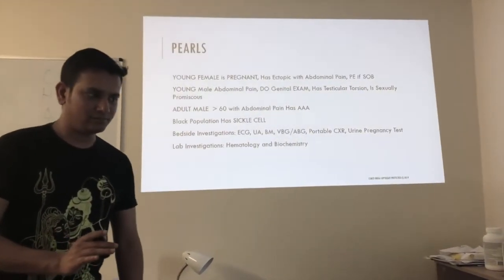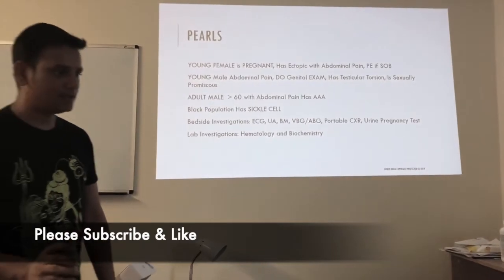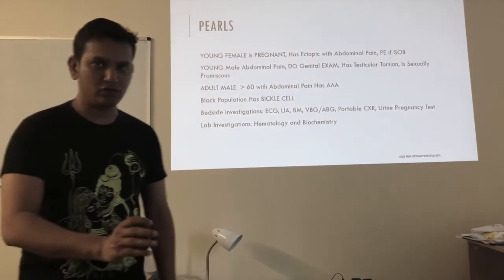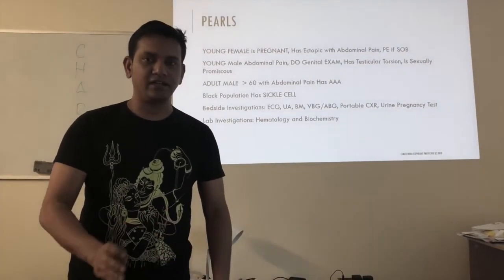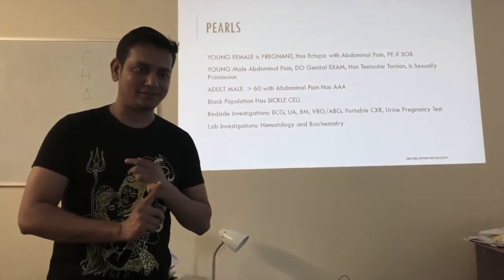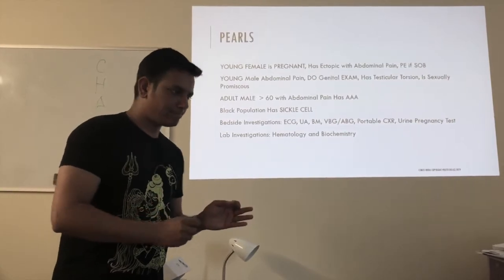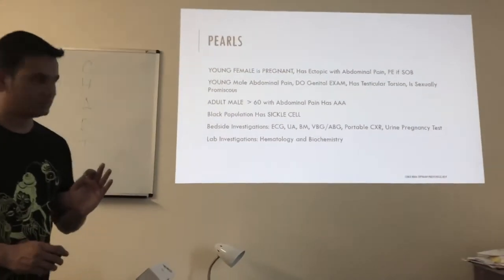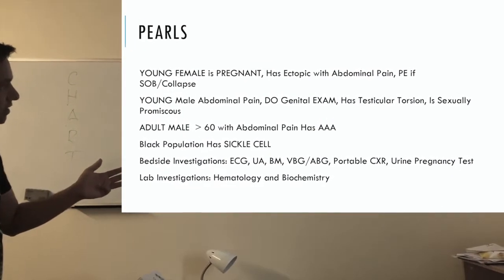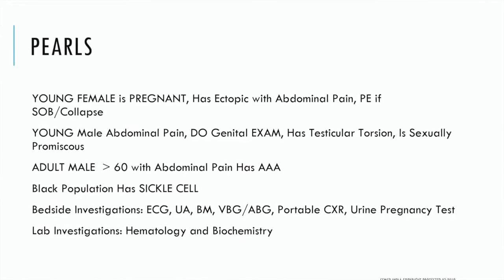Clinical pearls: a young female is assumed to be pregnant — if she comes with abdominal pain it is ectopic; if with shortness of breath, consider pulmonary embolism. A young male with abdominal pain — always examine the genitals, as it may be testicular torsion. Always ask for sexual history. Adult male or female over 60 with abdominal pain — get a triple A scan. Black population: consider sickle cell. Bedside investigations include ECG, urinalysis, urine beta-hCG, fingerstick glucose, venous blood gas, arterial blood gas, and portable chest X-ray. Lab investigations are hematology and biochemistry.